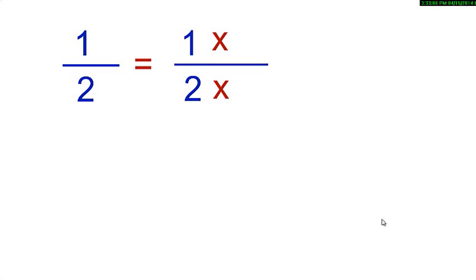Suppose my fraction is 1/2. Isn't 2 in the denominator? Remember 2's friend is 5. So I can multiply the numerator and the denominator by 5. Remember, a fraction does not change if you multiply both the numerator and the denominator by the same number.